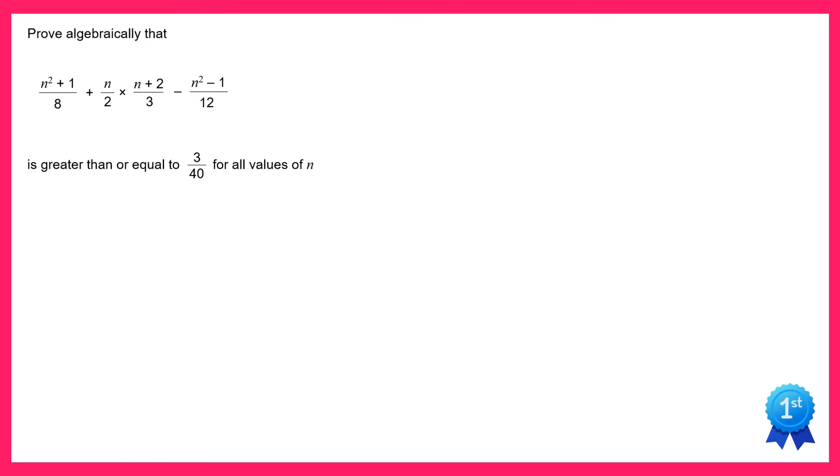For this question I'm going to start off by multiplying the two fractions in the middle here. So we've got n over 2 times n plus 2 over 3. To multiply these we multiply the numerators, so n times n plus 2, and also multiply denominators, 2 times 3 is 6. And of course we can expand that bracket: n times n is n squared and n times 2 is 2n.